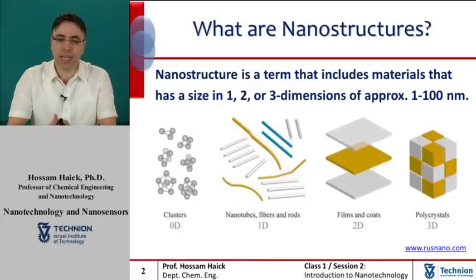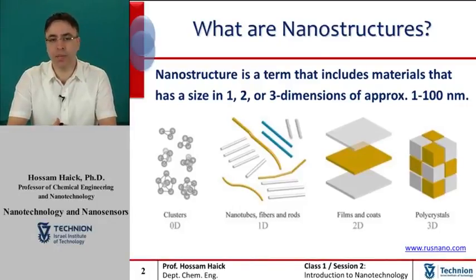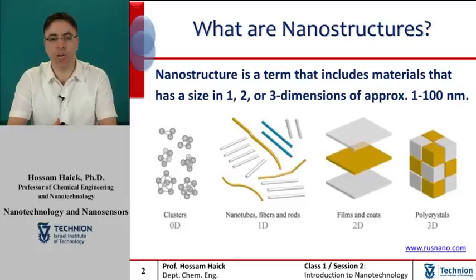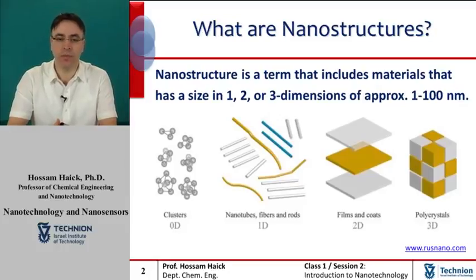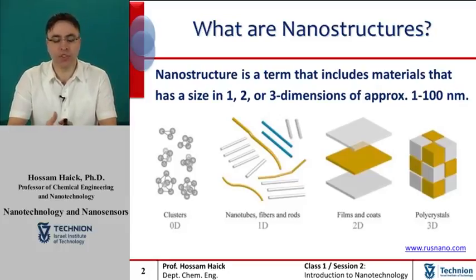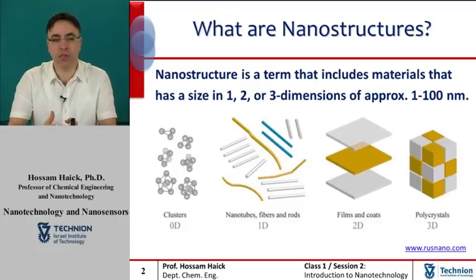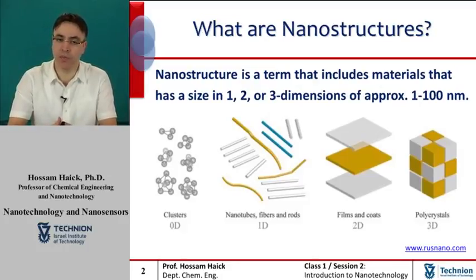A nanostructure is an object that has at least one dimension in the range of 1 to 100 nanometers. In describing nanostructures, it is needed to differentiate between the number of dimensions on the nanoscale.